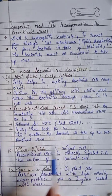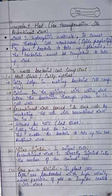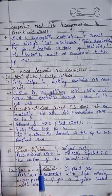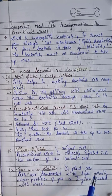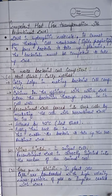The second method is micro-injection, which is used for animal cells. The recombinant DNA is directly injected into the nucleus of animal cells using a fine needle.